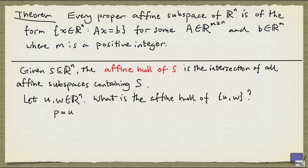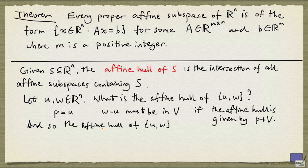W must be obtainable from P by a vector in V, and so the vector space must contain W minus U. Since this is a vector in a vector subspace, all scalar multiples of this must also be in V. So the affine hull of U and W must contain all the vectors of the following form.